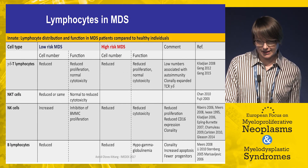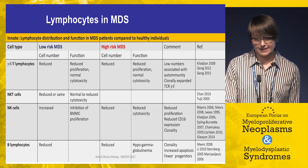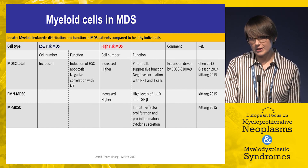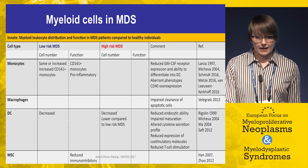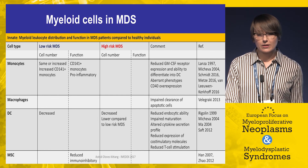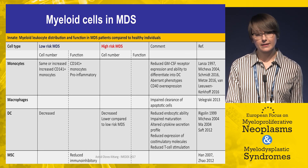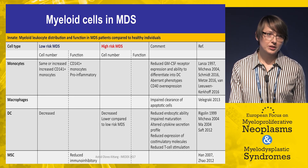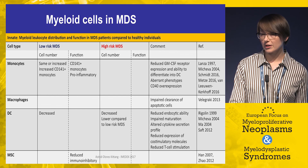Natural killer cells are increased in low-risk MDS and reduced in high-risk MDS. Dendritic cells are decreased in both low-risk and high-risk MDS, but even more so in high-risk disease. When attempting to differentiate monocytes into dendritic cells in vitro, this is more difficult with MDS-derived monocytes compared to monocytes from healthy donors.